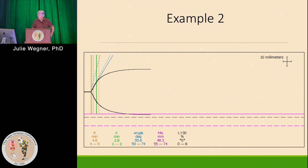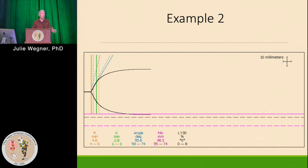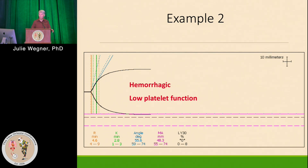Example two: the R value is normal, the K value is within normal range, but the angle is a little decreased, suggesting the rate at which the clot forms is slowed — that could be an issue with coagulation factors generating thrombin quickly enough and/or platelets. The MA value is low, so it suggests that fixing the MA with more platelets might be the appropriate treatment. If this patient is bleeding, more than likely it's because of low platelet function and/or number.